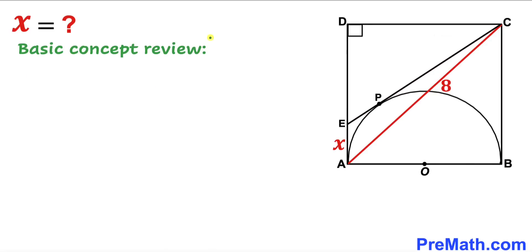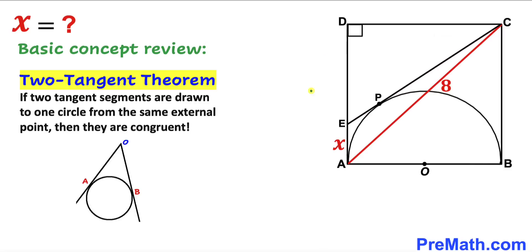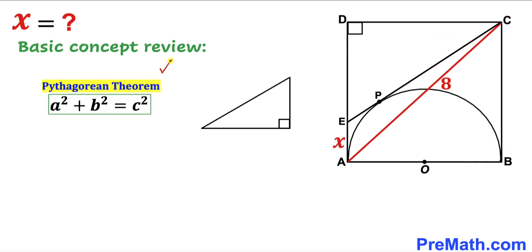Let me go over the basic concepts we will be using. First, the two tangents theorem: if two tangent segments are drawn to one circle from the same external point, then they are congruent. Second, the Pythagorean theorem: A squared plus B squared equals C squared, which applies only to right triangles.